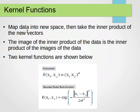Kernel functions map data into a new space, then take the inner product of the new vectors. The image of the inner product of the data is the inner product of the images of the data. Two example kernel functions are the polynomial kernel and the Gaussian radial basis function. Support vector machines can be used to classify non-linearly separable data using the kernel trick. Even for multi-class problems, we can transform them into binary problems using, for example, the one-against-all approach. Thank you very much for watching and I'll see you in the next video.